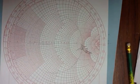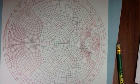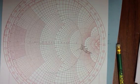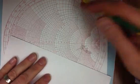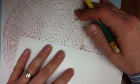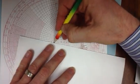And to find out what the angle is, I need a straight edge. And I'm going to draw a straight line from the center of the chart, out through this point.